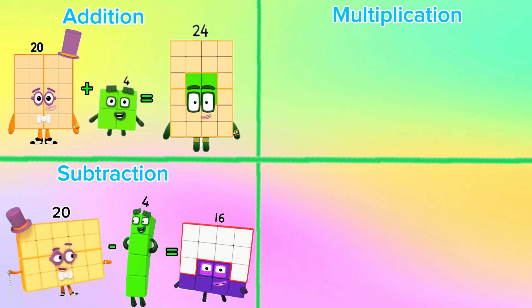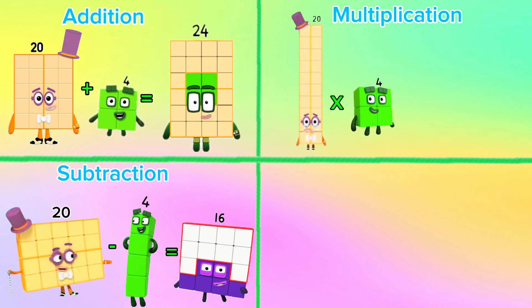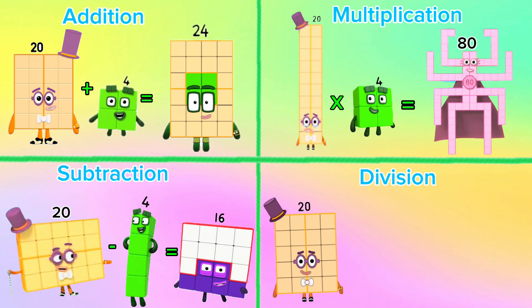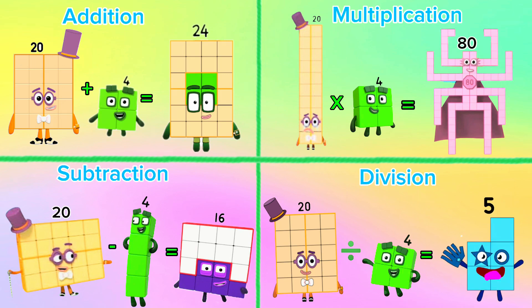Let's try multiplication. 20 multiplied by 4 is equals to 80. Next is division. 20 divided by 4 is equals to 5.